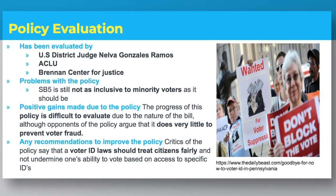Policy evaluation: District Judge Melba Gonzalez-Ramos ruled that the 2011 voter ID law disproportionately targeted minority voters, who were less likely to have the required forms of ID. The bill has also been evaluated by organizations such as the ACLU and the Brennan Center for Justice. People have argued that SB 5 is still not inclusive enough to minority voters, and opponents argue that it does very little to prevent voter fraud. Critics say that voter ID laws should treat citizens fairly and not undermine one's ability to vote based on access to specific IDs.